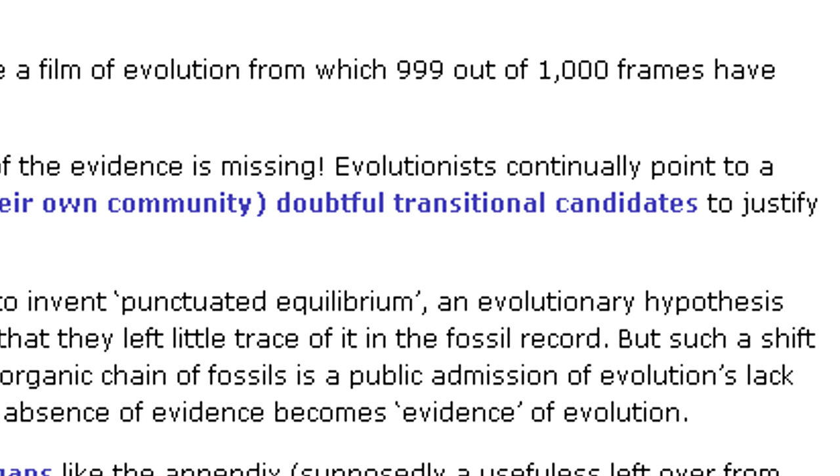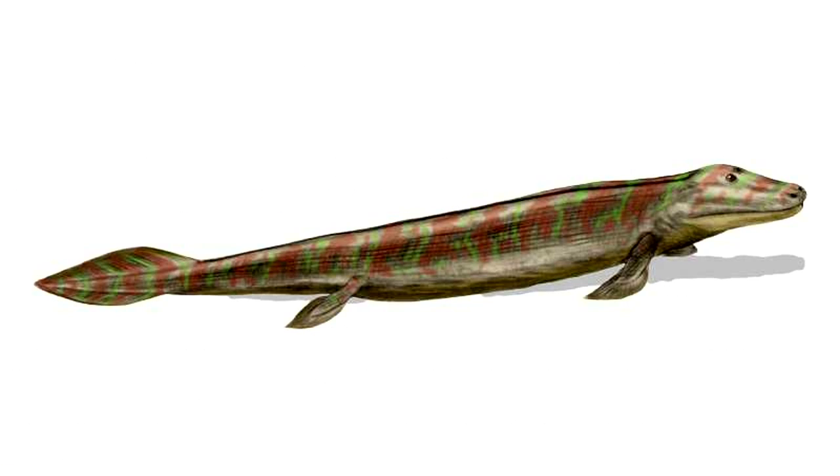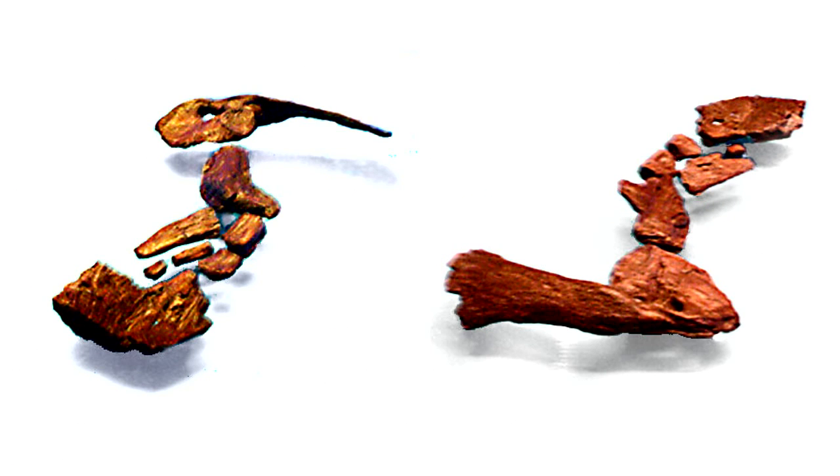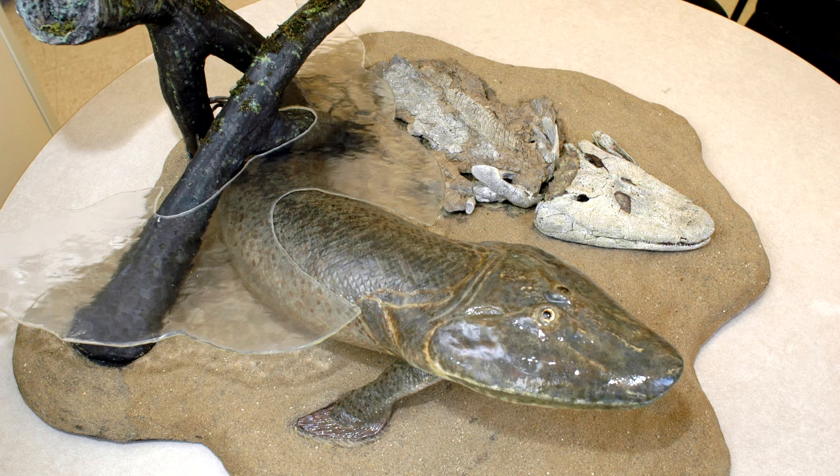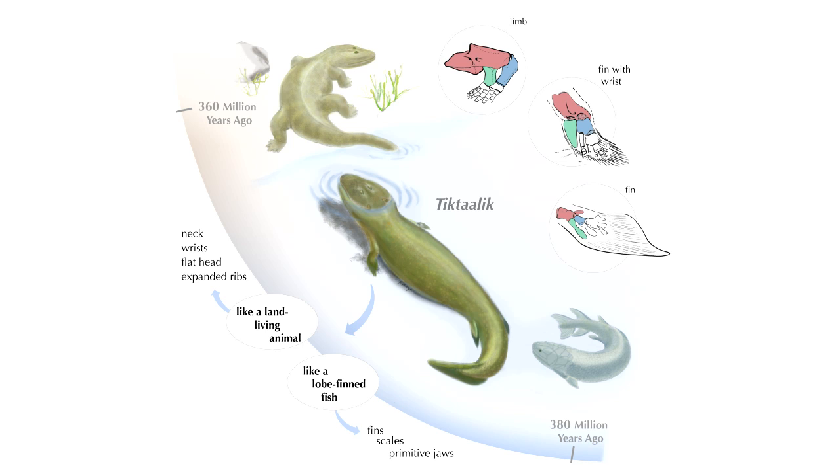For an example, let's look at the fossil Tiktaalik. This is a half-fish, half-tetrapod. It has fish gills and scales, and tetrapod ribs, neck, and lungs. Its limbs and ears are halfway between those of fish and tetrapods. By all accounts, this is a transitional form, exactly what anyone would expect.